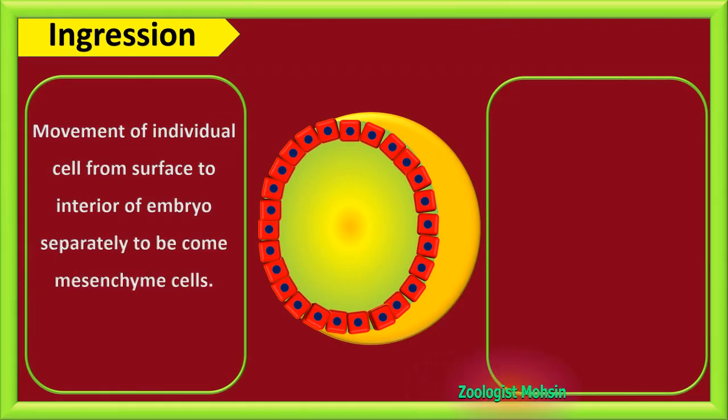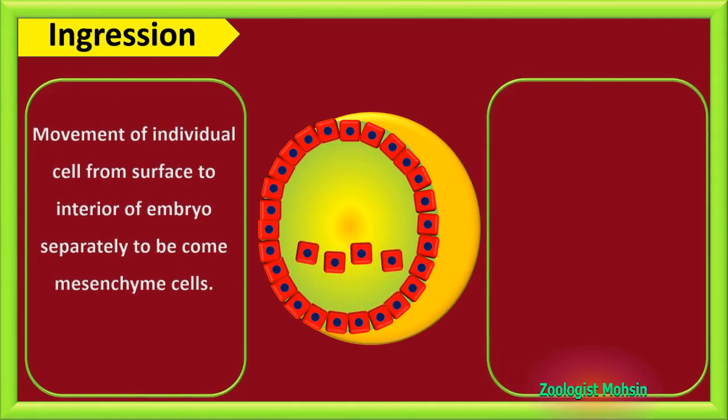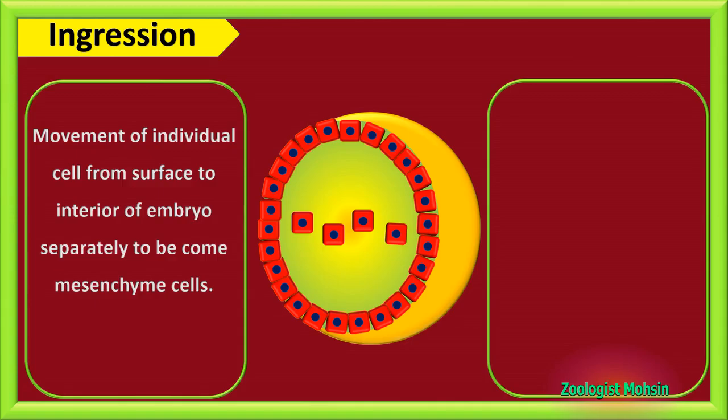Ingression: movement of individual cells from surface to interior of embryo separately to become mesenchyme cells. That movement is totally independent and separate individually.